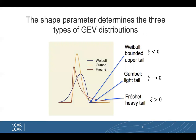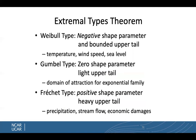The shape parameter is important in extreme value theory because it determines the three types of GEV distributions. There's the Weibull, which is the bounded upper tail, where the shape parameter is less than zero. The Gumbel, which is the light tail, where the shape parameter is approximately zero. And the Fréchet, which is the heavy tail, where the shape parameter is greater than zero. In general, the Weibull type is often fitted to temperature, wind speeds, or sea level. The Gumbel type, the domain of attraction for the exponential family. And the Fréchet type often fits precipitation, stream flow, or economic damages.